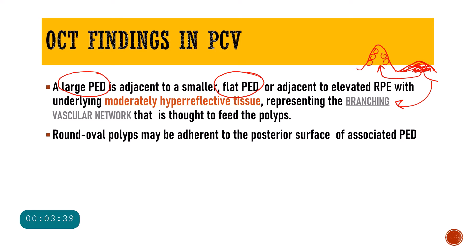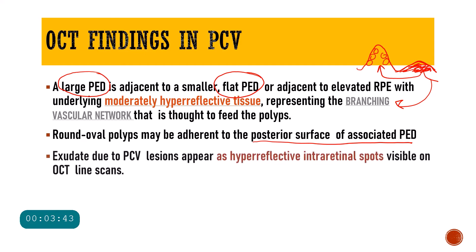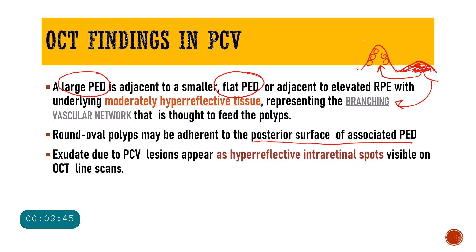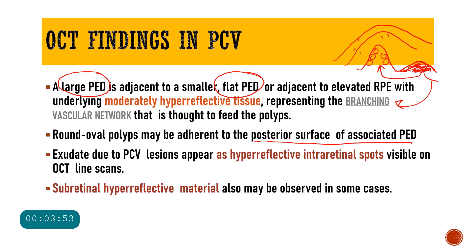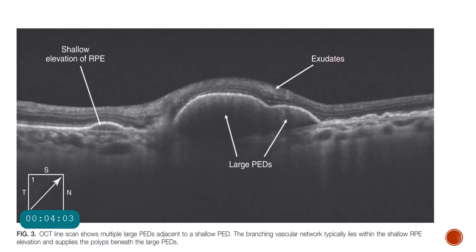These polyps cause exudation, and these exudates will be seen in the retina as hyper-reflective dots. Sometimes subretinally — that means in between the RPE and the retina — a subretinal material might also be observed.